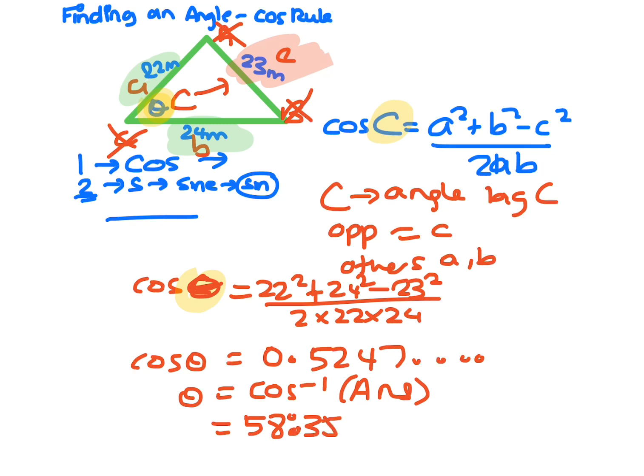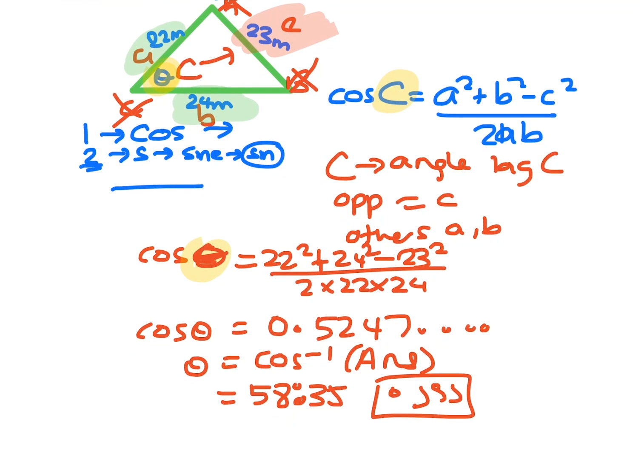35.35. Now if I press the degrees, minutes, and seconds button - remember this one - it'll change it to degrees and minutes. So you get 58 degrees and 21 minutes as your angle.